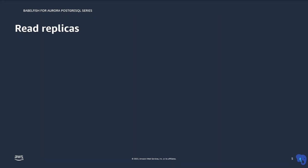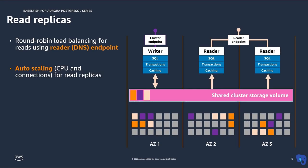Let's look at the read replicas. In Aurora, the writer and readers share the same storage. This is why creating readers doesn't take much time, as all it needs is creating a compute instance and attaching it to the same storage. In Aurora, you can create up to 15 read replicas with load balancing and can configure auto scaling between these read replicas. This gives scalability for your read workloads with auto scaling.